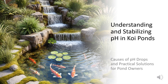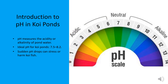Welcome to this guide on understanding and stabilizing pH in koi ponds. If you're a pond owner, learning how to maintain a stable pH is crucial for keeping your koi healthy and your pond thriving. pH is a measurement of the acidity or alkalinity of your pond water. For koi ponds, the ideal pH range is between 7.5 and 8.2. Sudden pH drops can cause serious stress or even harm your koi fish.